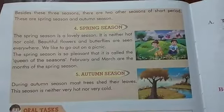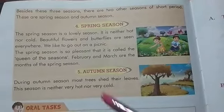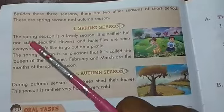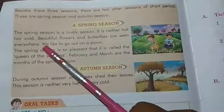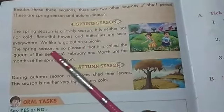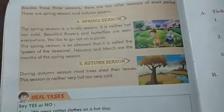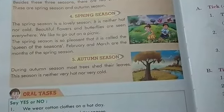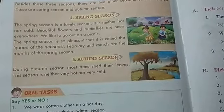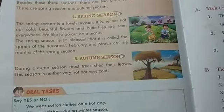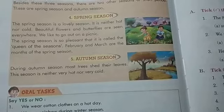Now we will read about two seasons which last for a very short period — spring season and autumn season. The spring season is a lovely season; it is neither hot nor cold. Beautiful flowers and butterflies are seen everywhere and we like to go out on a picnic. Spring season is called the queen of the seasons because it is very pleasant. It comes in the months of February and March.